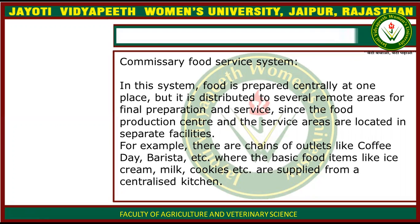You can see that there is a chain. There are many food group chains like Coffee Day which are spread widely. Foods like ice cream, milk, chocolate, and cookies are supplied from the centralised kitchen — that is the main kitchen of your organisation. All the ingredients are transported from the main kitchen, and then there is a final preparation at the outlet.